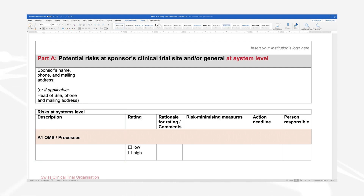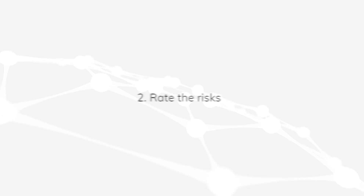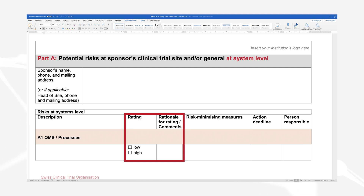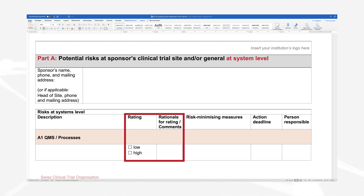Step 2: Rate the risks. Assess whether the risk should be rated high or low in accordance with GCP or any other applicable laws and regulations. Briefly state your reasoning for this classification.